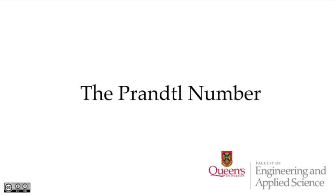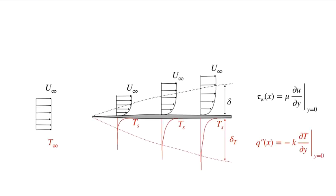In this video, we're going to introduce, define, and discuss the Prandtl number. Here, we're looking at the flow impinging upon a flat plate, and we see that we have the development of a momentum boundary layer, where the velocity is transitioning from zero at the surface out to the freestream value u-infinity. That momentum boundary layer grows with position along the plate and is characterized by the dimension delta, the local thickness of the momentum boundary layer.